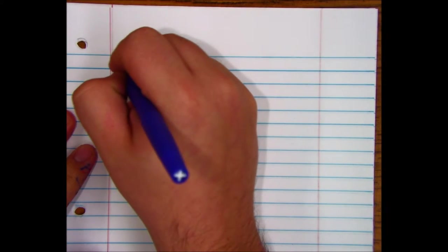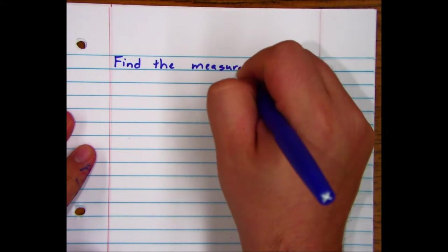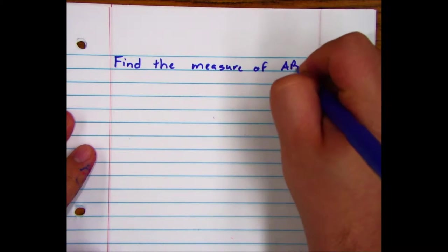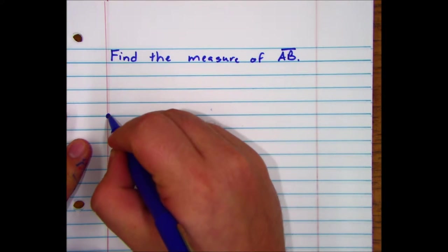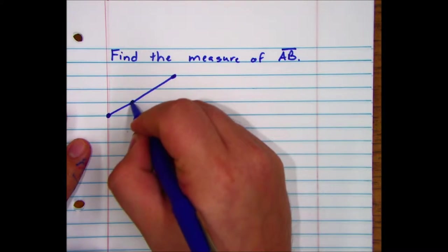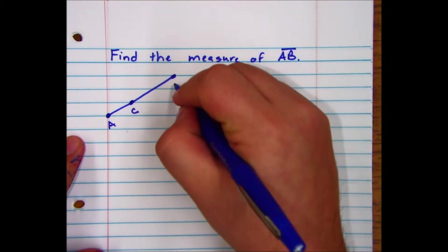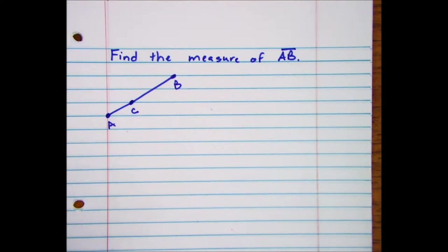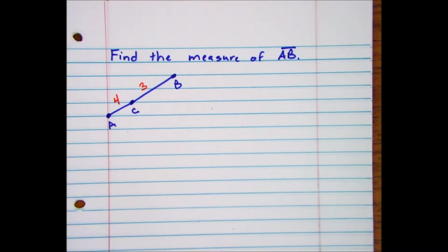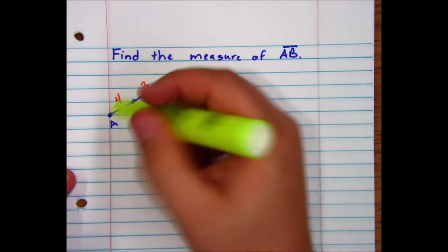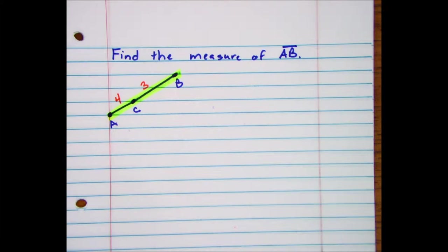Let's say I want to find the measure of AB. Now we're going to simply talk about line segments because they're measurable. Now I want you to note that we're finding the measure of AB. So I want you to see where AB is.